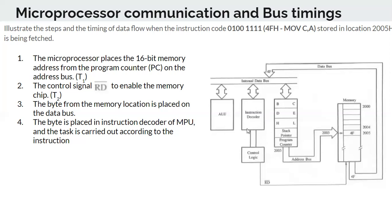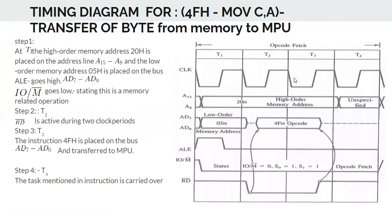Whatever operation is mentioned in the instruction — in this case moving data from the accumulator to the C register — that will be carried out. Now we will look at the timing diagram.